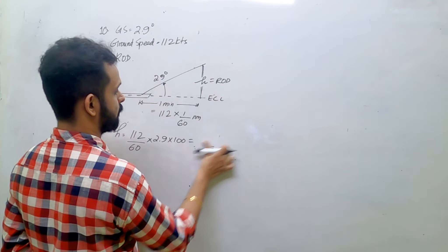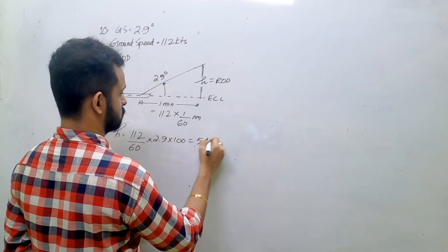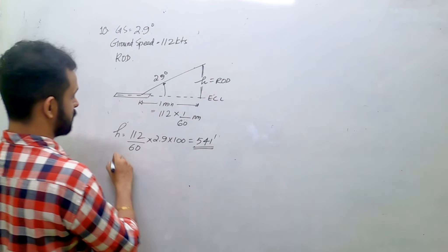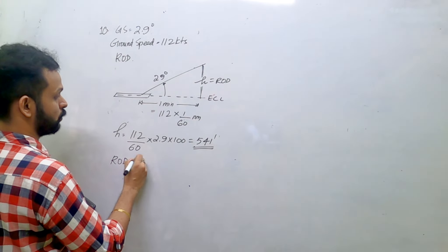Which is 541 feet, and this height itself is the rate of descent because you have to lose this height in one minute.